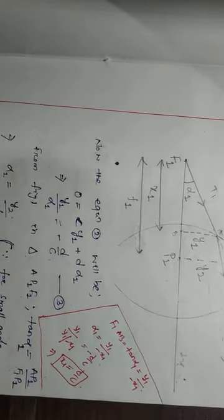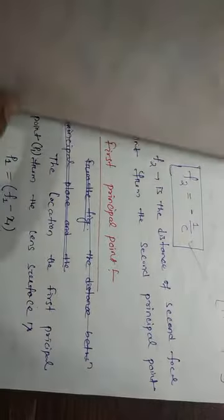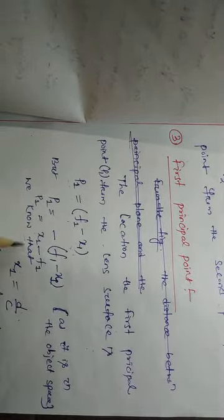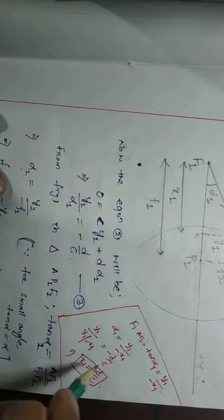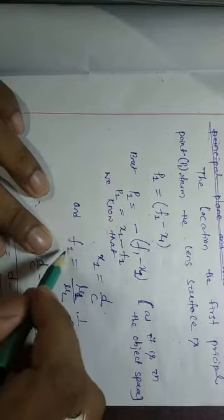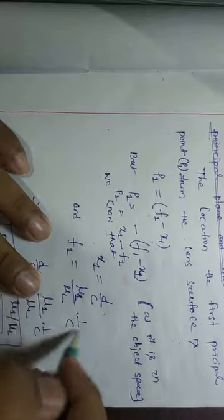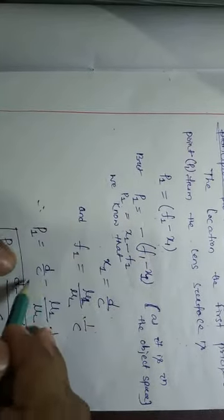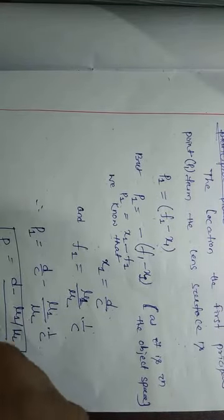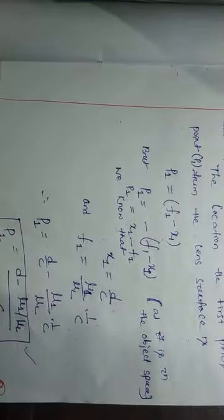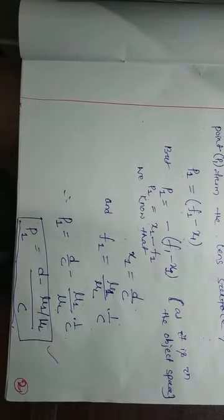So we have confirmed that X1 = D/C. Now for the first principal point: X1 = D/C and F1 = μ1/μL × 1/C. Therefore, P1 = X1 − F1 = D/C − μ1/(μL × C) = (D − μ1/μL) / C. This is the location of the first principal point.